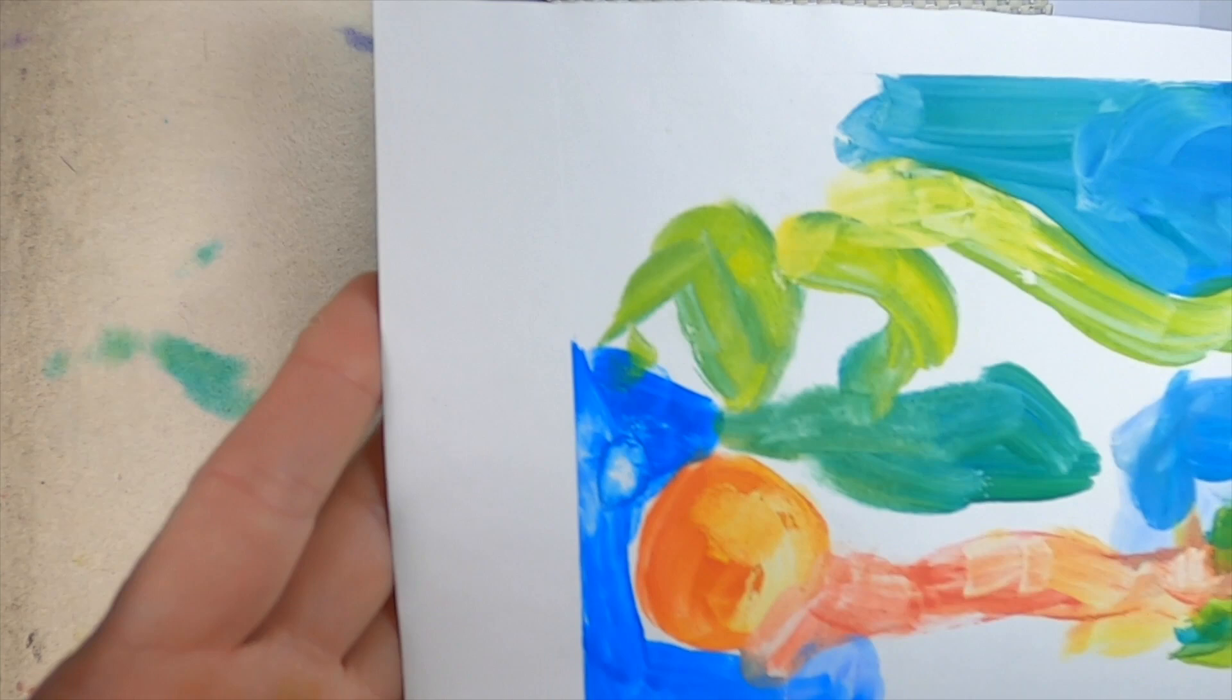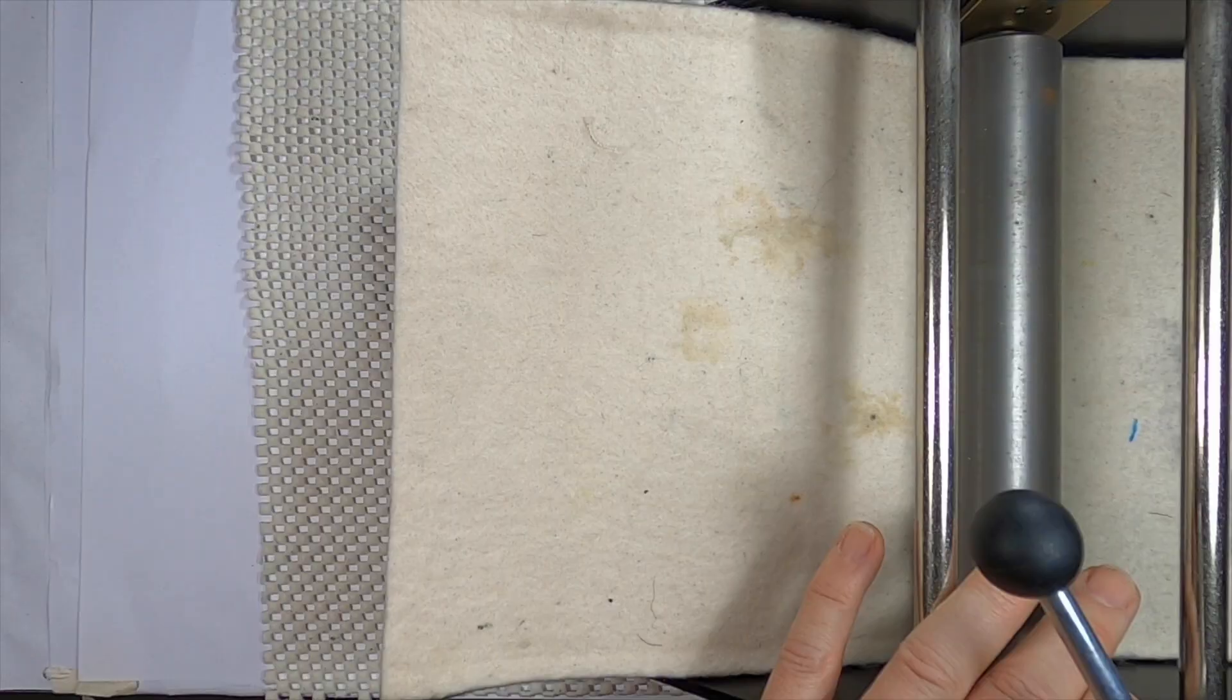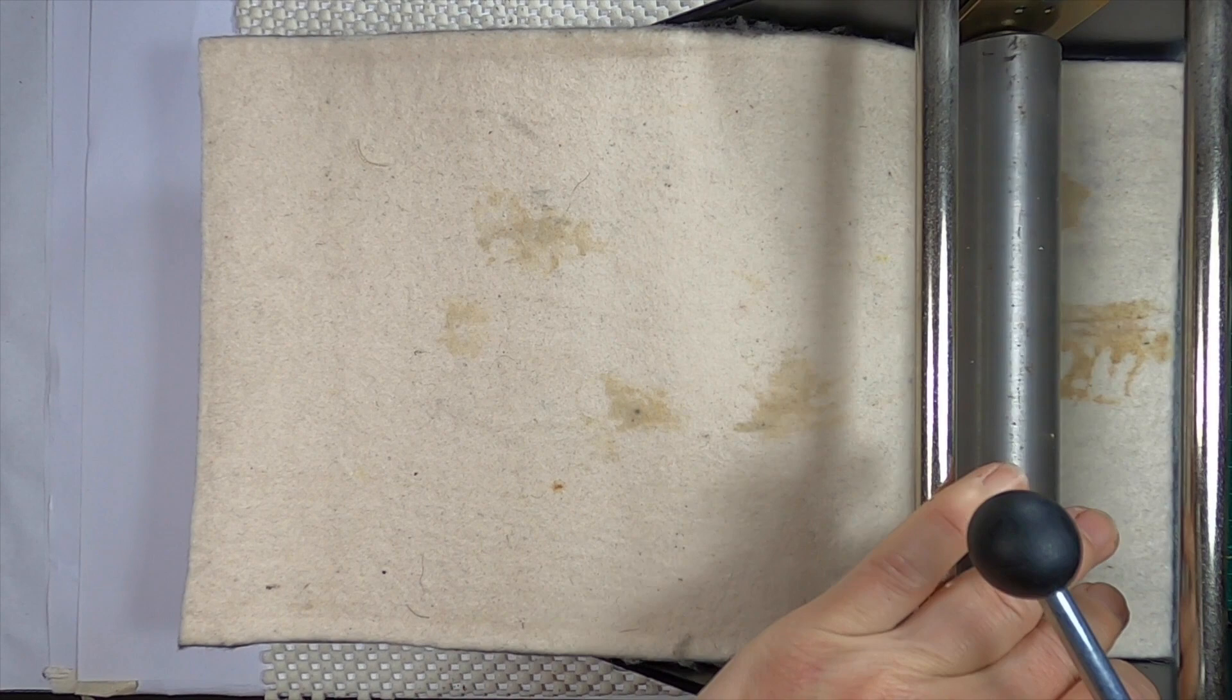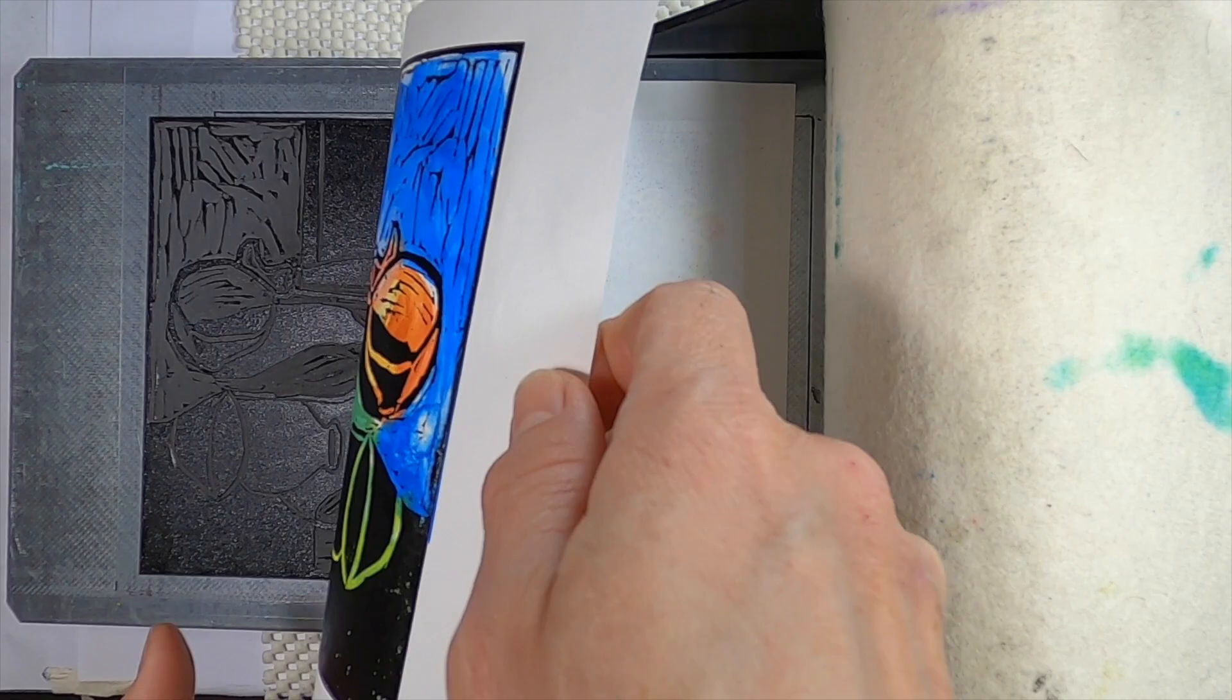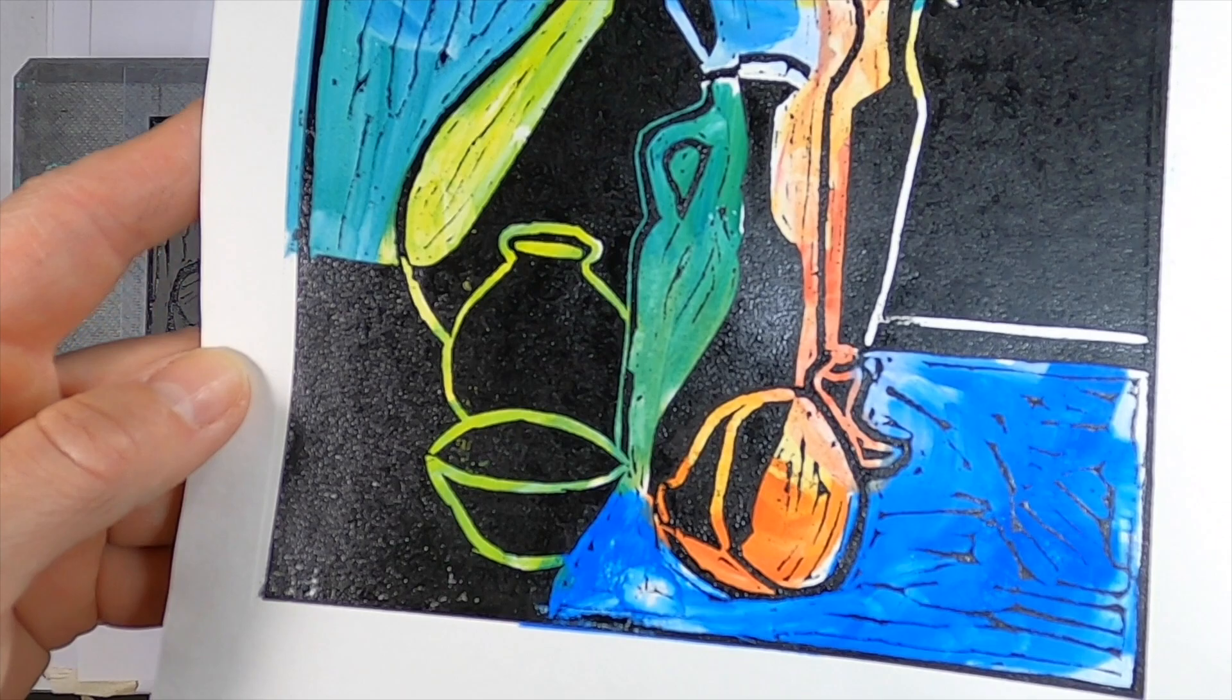Here's the watercolor transfer which is now dry. I'm laying this face down onto the lino plate and lining it up with the borders of the registration plate. This time because I'm transferring the lino ink I don't need as much pressure on the press so don't forget to re-adjust for a lino print level of pressure. And as long as you've used the registration plate the color transfer and the lino print should line up.